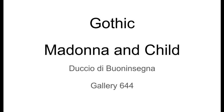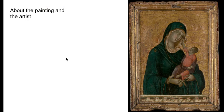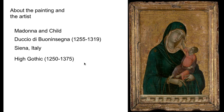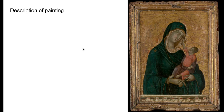Hey guys, I'm going to talk to you today about the Gothic period using Madonna and Child by Duccio in gallery 644. The title of this work is Madonna and Child. The artist is Duccio di Buonensegna, who lived from 1255 to 1319. He was active in Siena, Italy, and this period represents the High Gothic from 1250 to 1375.